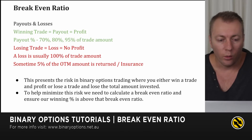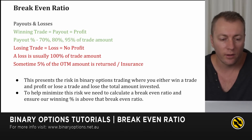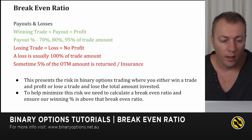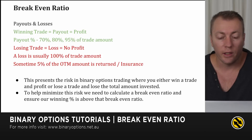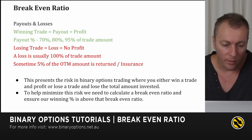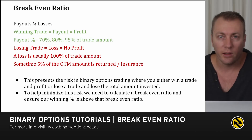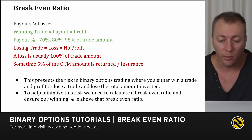A break-even ratio will consist of payouts and losses. A winning trade equals your payout, which equals your profit. Payouts are usually a percentage based on your trade amount and can range from 70% all the way up to 95%. A losing trade is your loss, which equals no profit. A loss is usually 100% of your trade amount, though sometimes brokers may return 5% of your out-of-the-money amount as insurance. So if you traded $100 and lost, they may return $5 back into your account.